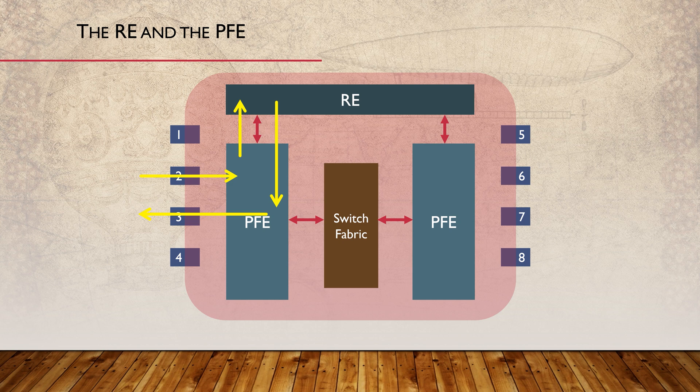Now consider this example. Traffic arrives at the router, but the router does not have a route for this traffic and therefore can't forward it. The router would then need to create and send an ICMP message back to the sender. As this traffic comes from the router itself, you would think this is handled by the RE. However, on a modern Juniper router, this function is offloaded to the PFE. This lightens the load on the RE. Other features that are offloaded to the PFE include quality of service, policing, and stateless firewall filtering.